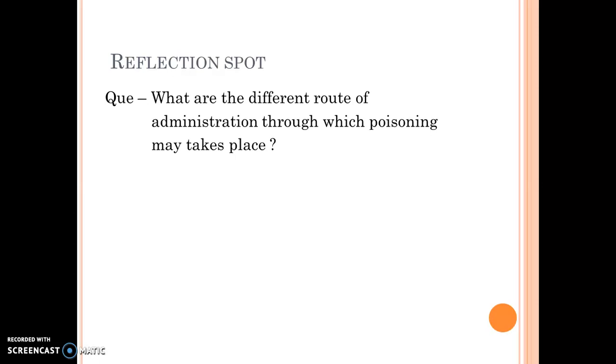Yes, you are right. The poisoning may take place by different routes of administration, but oral and inhalation are the major routes of administration. In the oral route of administration, poisoning takes place by ingestion of the poison. And in inhalation, poisoning takes place by respiration. In some cases, poisoning also takes place by the topical route.